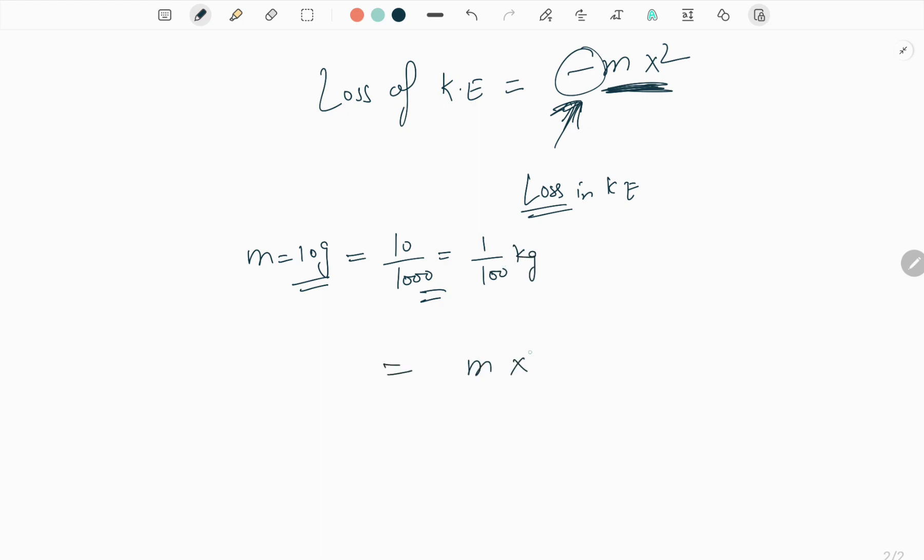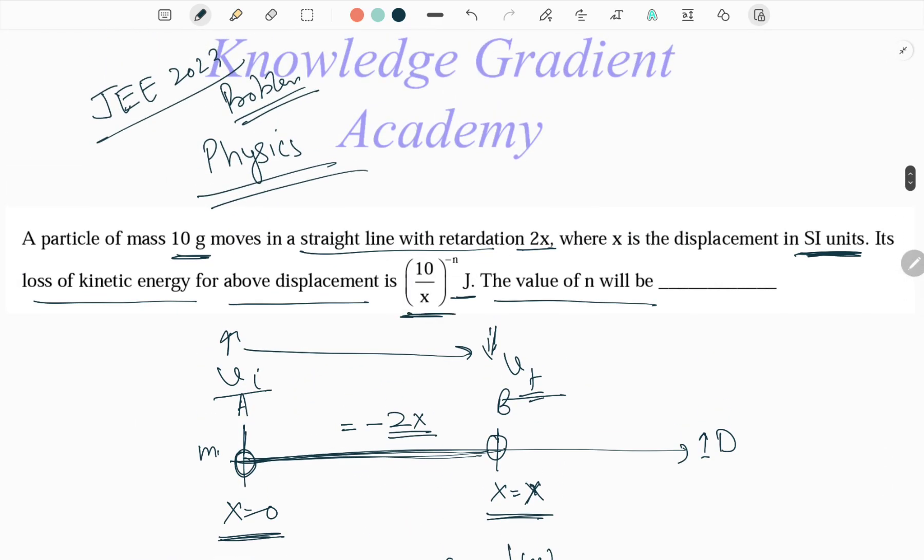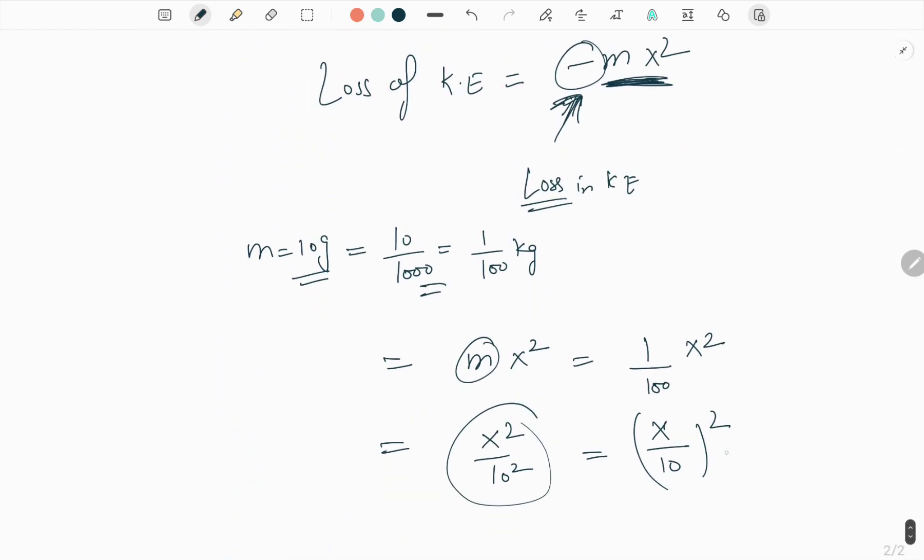So m x squared where m is 1 by 100 into x squared. We can write this as x squared by 10 squared, or (x by 10) squared. But in our question he is asking about 10 upon x. So what we will do is change the power, and now to convert into 10 by x, it becomes minus 2. So here the n value is 2, so the final answer is 2.